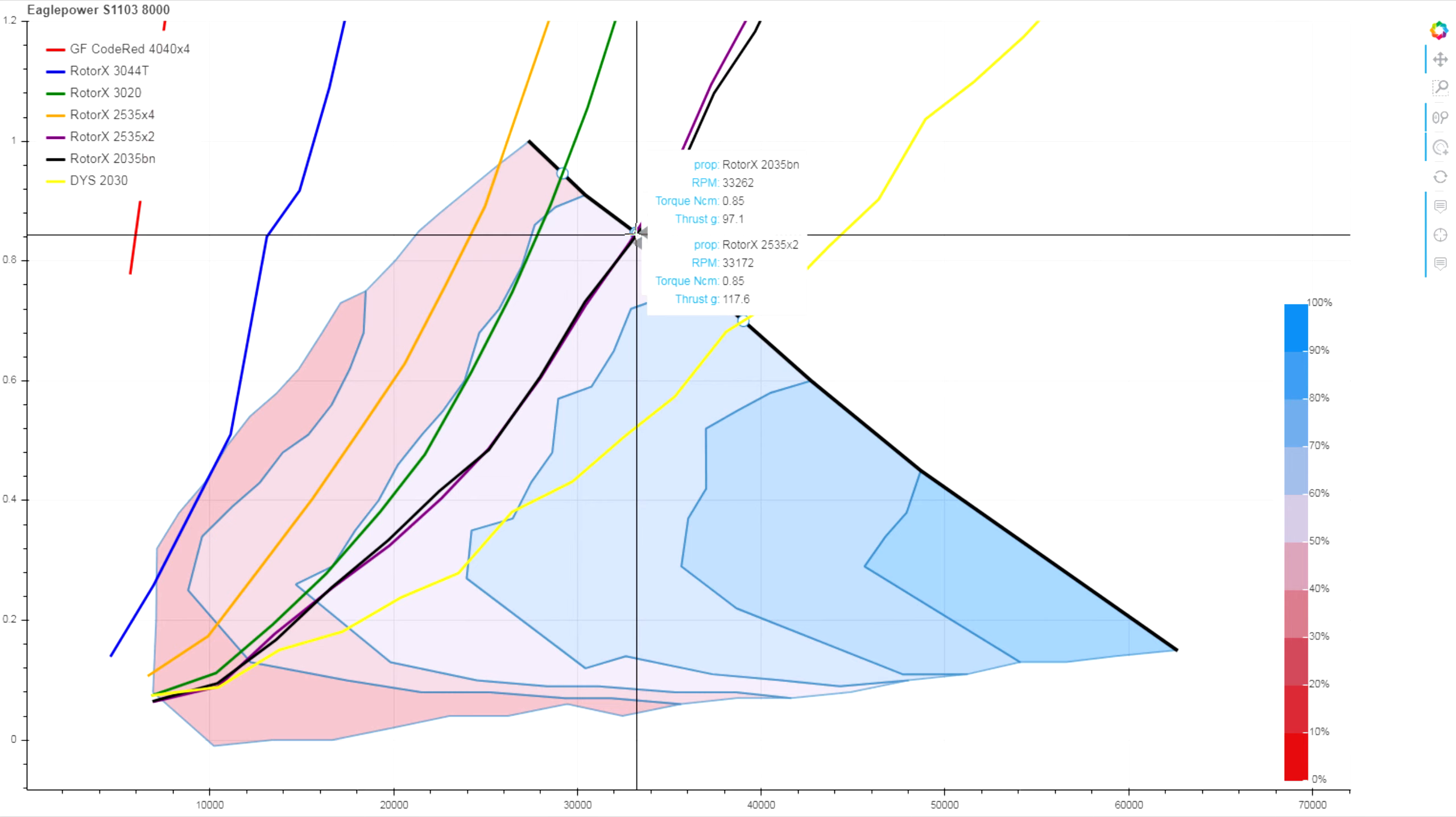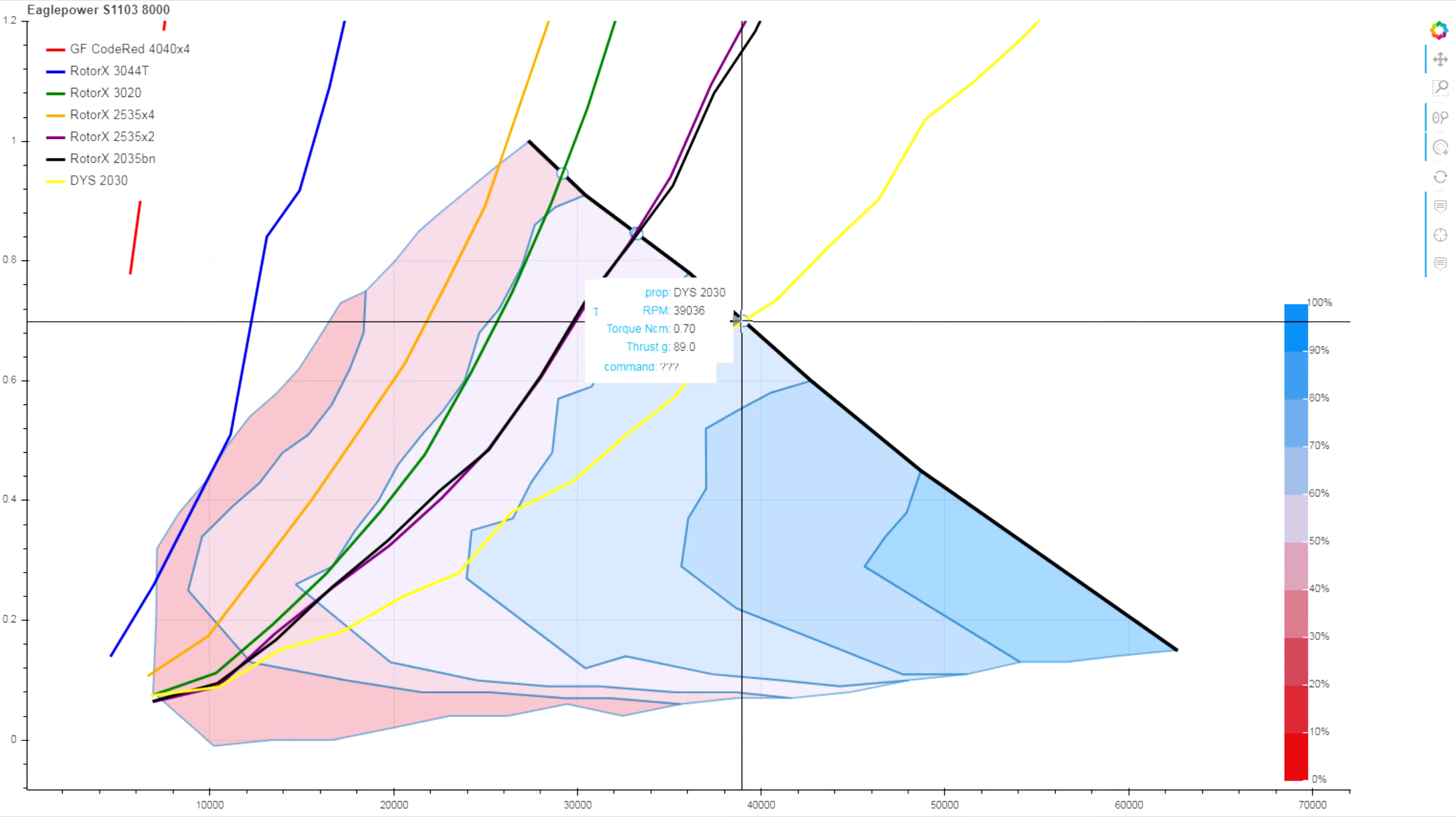In terms of thrust on this light three inch we're looking at about 137 grams. On the heavy two inch we're seeing 97 and on our light two inch we're seeing about 89 grams of thrust.